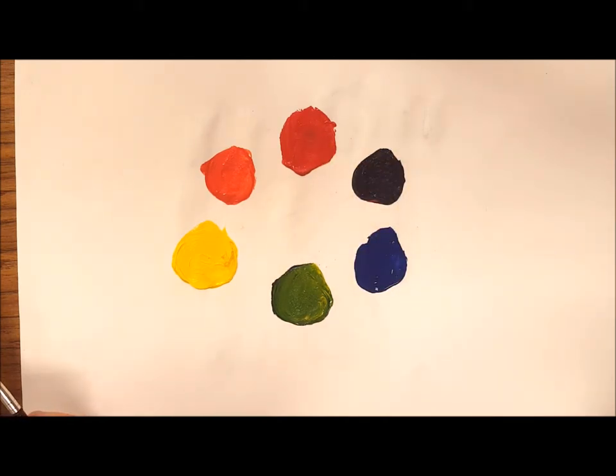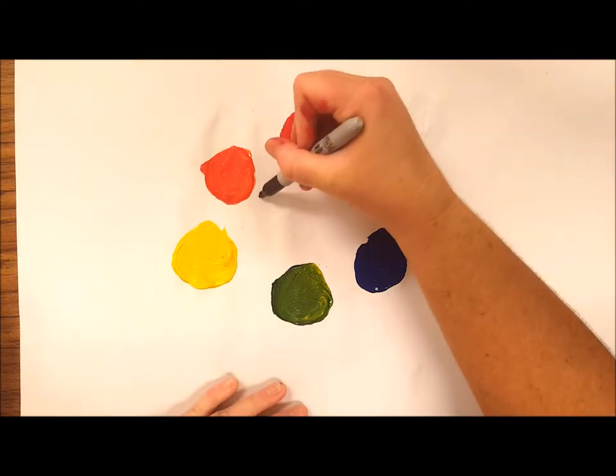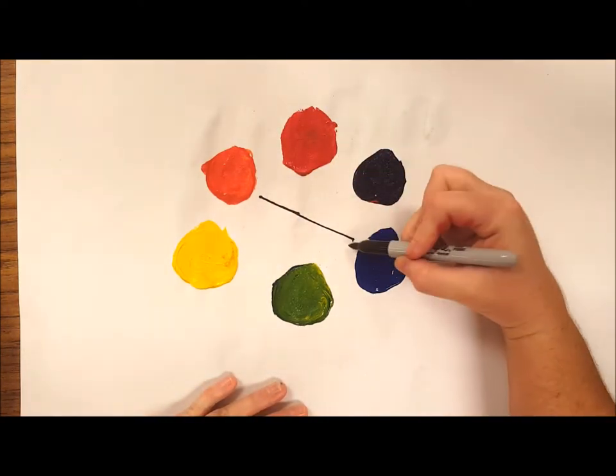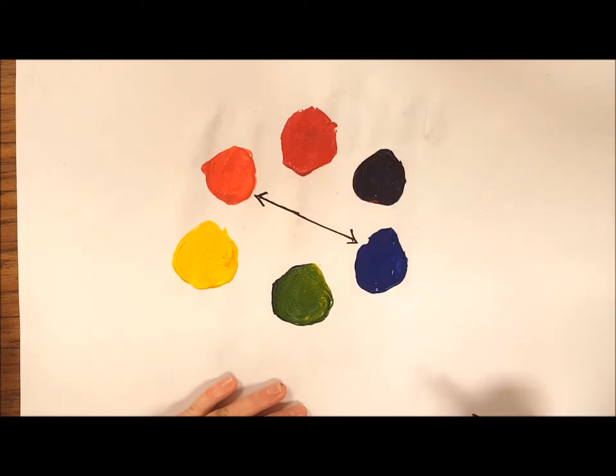Now the colors that are across from each other on the color wheel are called complementary colors. This means that orange and blue are complementary colors because they're across from each other on the color wheel.